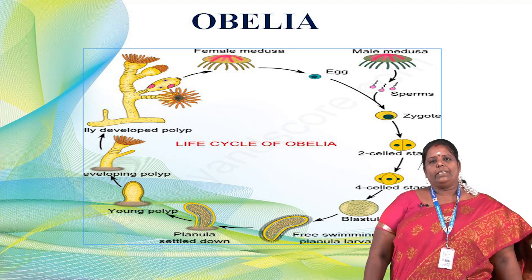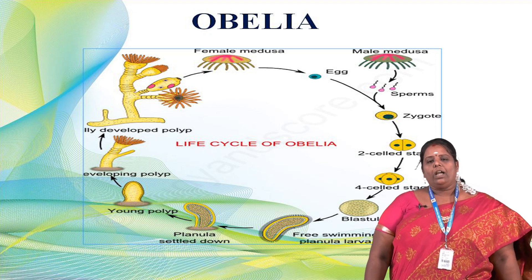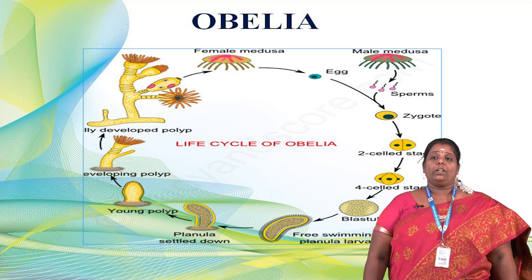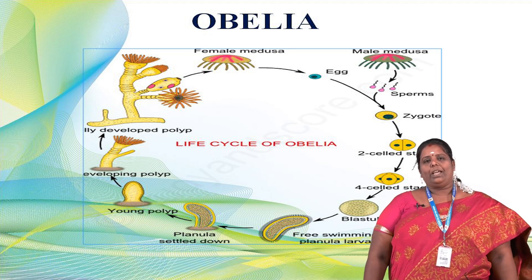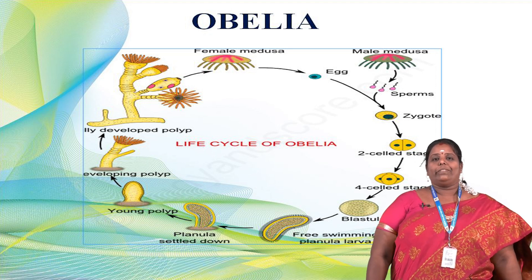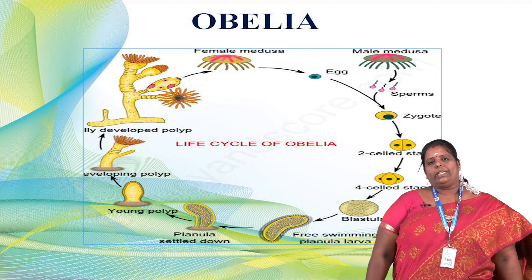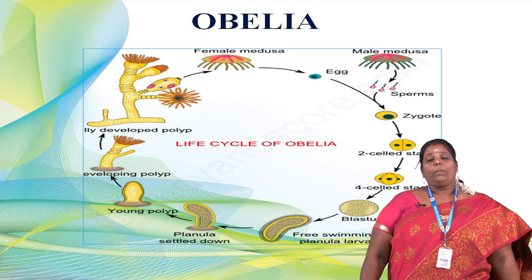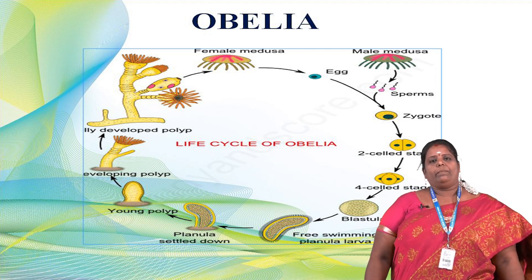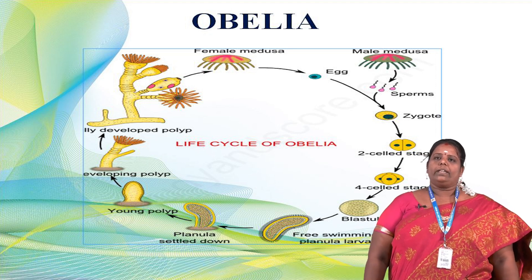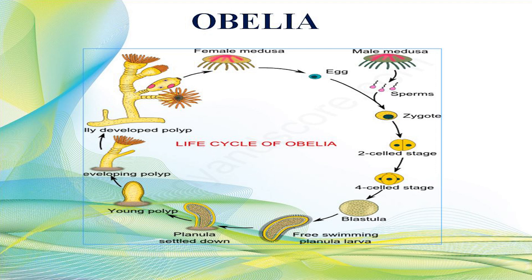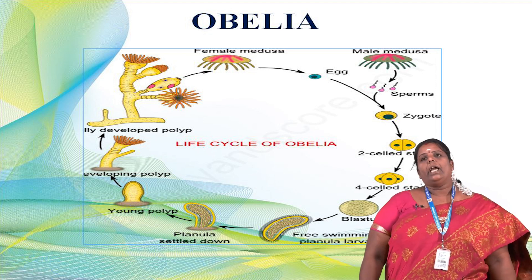The male polyps contain sperm and the female polyps contain eggs. After fertilization, a zygote is formed. The zygote goes to a two-cell stage, then a four-cell stage, and then develops into the blastula stage. From the blastula stage, a free-swimming larva called the planula larva is developed. The planula larva grows and forms a young polyp. The polyp develops into the Obelia colony and also produces medusae. The life cycle continues — from sperm and egg, developing stages produce a new Obelia colony.